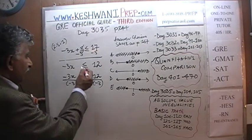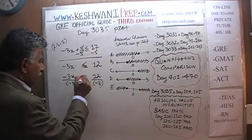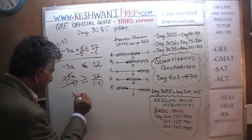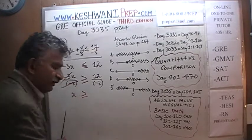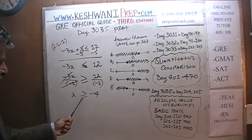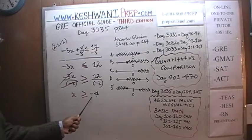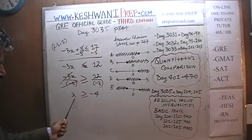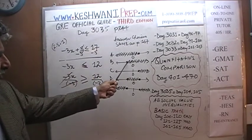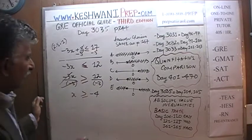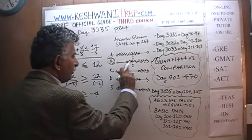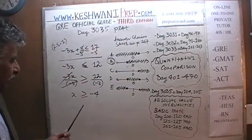So this less than or equal to sign will become a greater than or equal to sign. The negative 3 goes away, and x is greater than or equal to 12 divided by negative 3, which is negative 4. x is some value greater than or equal to negative 4. As long as it's greater than or equal to that negative number — negative 4 falls here on the number line — that's your answer, even though the answer choice does not show negative 4 explicitly.